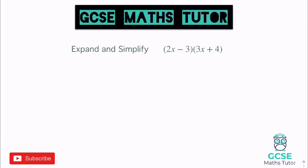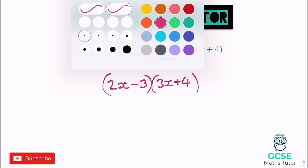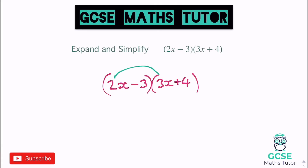Let's have a look at something slightly different. In this question we have coefficients of x greater than 1 — 'coefficient' just meaning the number in front of the x. We've got 2x minus 3 and 3x plus 4. I'm going to do exactly the same approach, just rewriting these so it's a little clearer: 2x minus 3 and 3x plus 4. On to the first two: 2x times 3x — we still get an x squared, but the numbers multiply together too, so 2 times 3 is 6, giving us 6x squared.